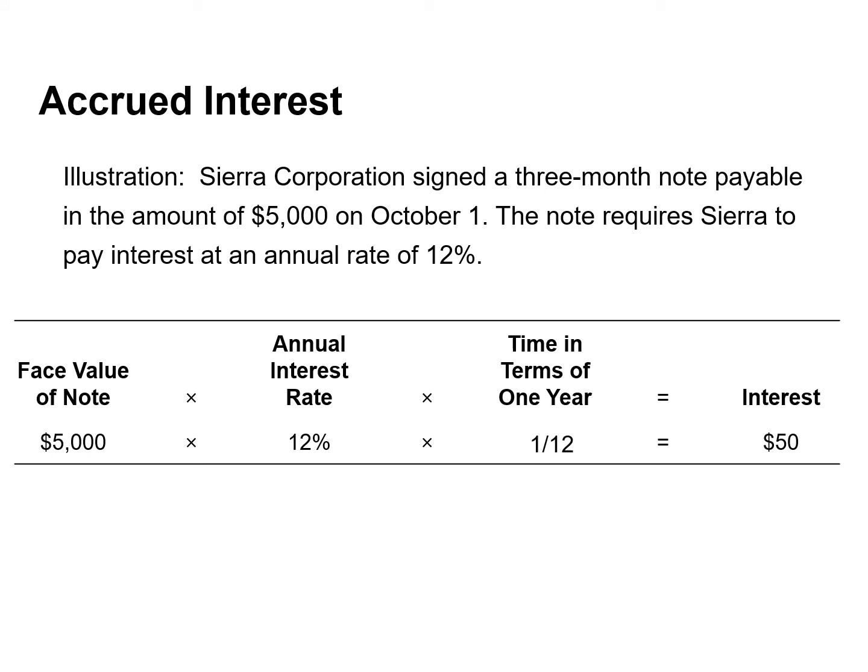When we calculate interest, we express the time period as a fraction of one year. Sierra will record one-twelfth, or one month, of interest at the end of October. The adjusting entry will increase, or debit, interest expense and increase, or credit, interest payable for $50. Sierra will not pay the interest until the note comes due at the end of three months. The same adjusting entry is recorded at the end of November and December. The total interest due on the $5,000 note at its maturity date, three months in the future, is $150, or $50 for each month.